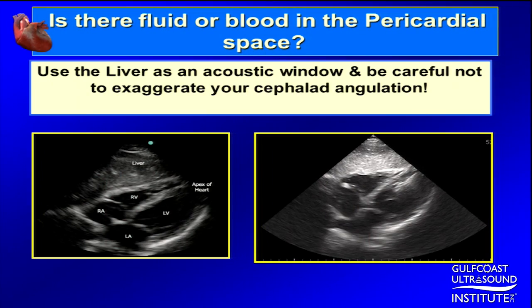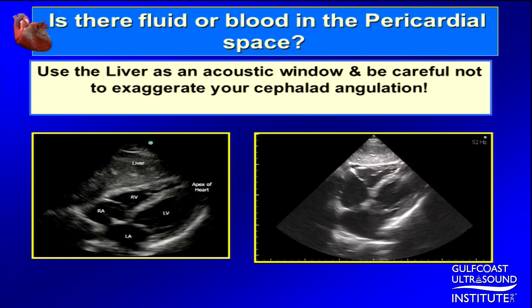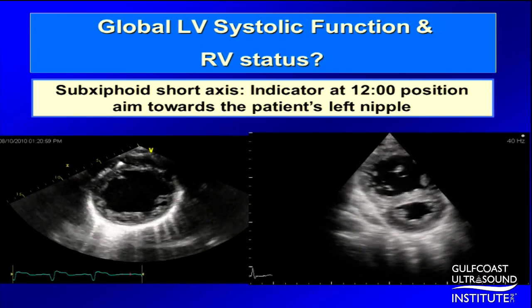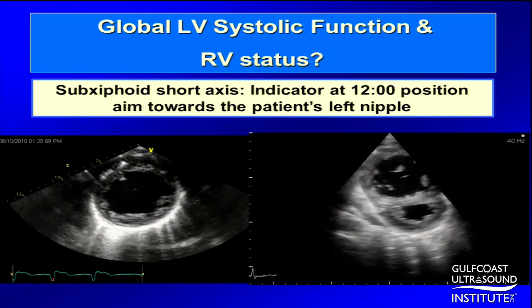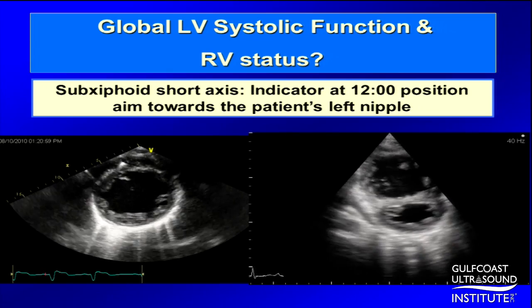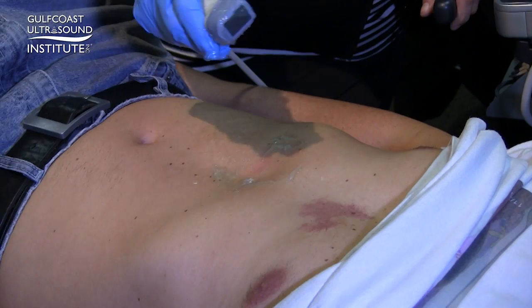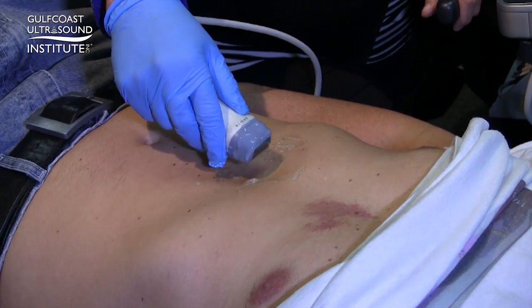Question number one: is there fluid or blood in the pericardial space? What is the global LV systolic function and RV status? And the third question: volume response. The three questions — fluid, function, and volume.